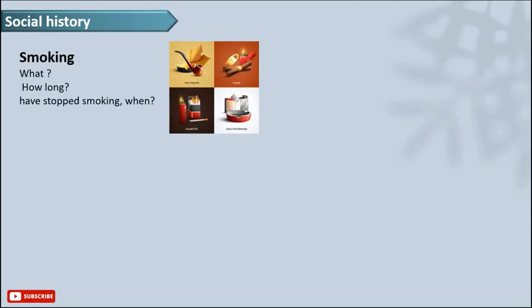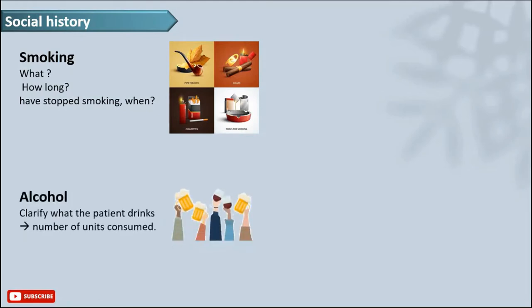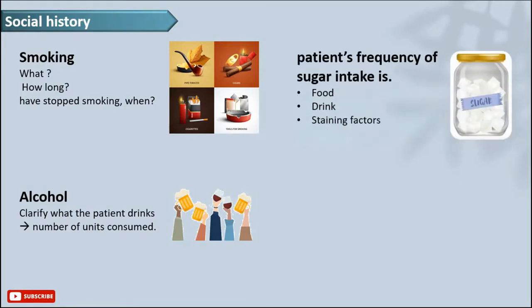Now to the social history. In this section you ask the patient about firstly their smoking habits. Do they smoke or not? And if yes what exactly do they smoke? For how long? And have they stopped or not? Then you ask them about their alcohol intake. Do they drink any alcohol or not? And also the number of units they consume in the week.